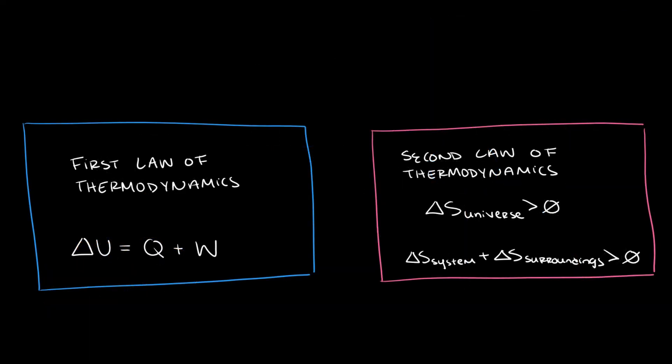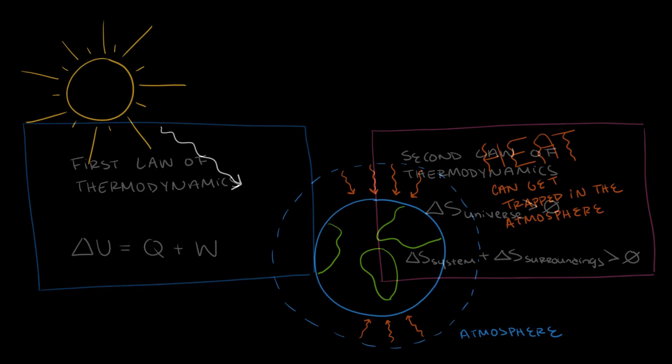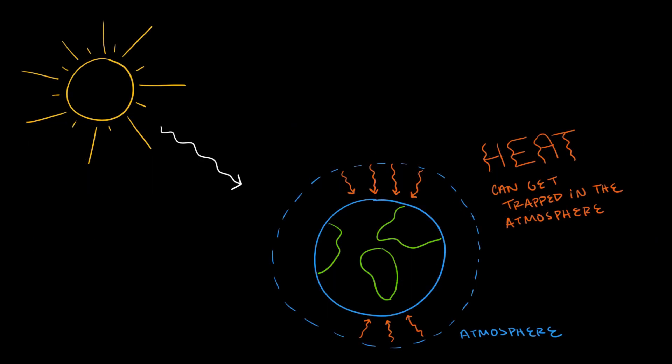So, this important process of photosynthesis rests on two very important thermodynamics principles. The first law of thermodynamics, which states that energy is conserved, and also the second law of thermodynamics, which states that spontaneous processes will increase the entropy of the universe. This directionality of energy flow is not always straightforward. The trapping of energy released into the atmosphere is one cause of climate change.